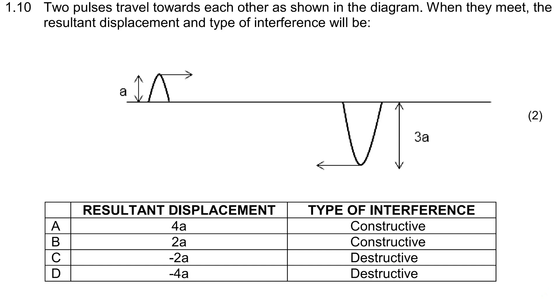Two pulses travel towards each other as shown in the diagram. When they meet, what will be the resultant displacement? Well, this one's really easy.